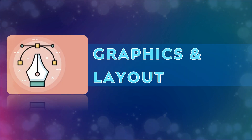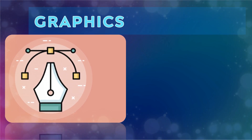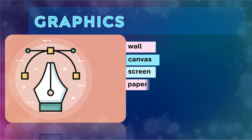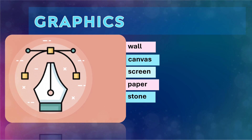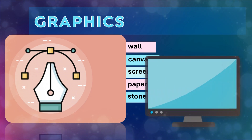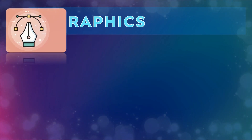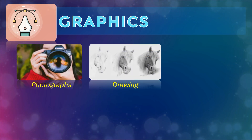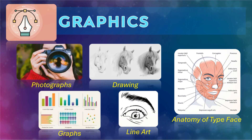Next is graphics and layout. Graphics are visual images or designs on some surface such as a wall, canvas, screen, paper, or stone to inform, illustrate, or entertain. These are also visual representations of data made on a computer and displayed on a computer screen or monitor. Some examples of graphics are photographs, drawing, anatomy of typeface, line art, and graphs.